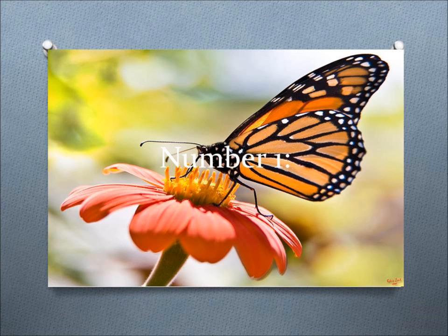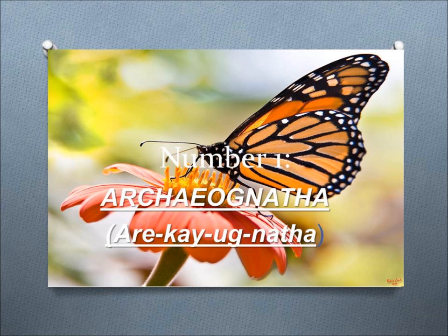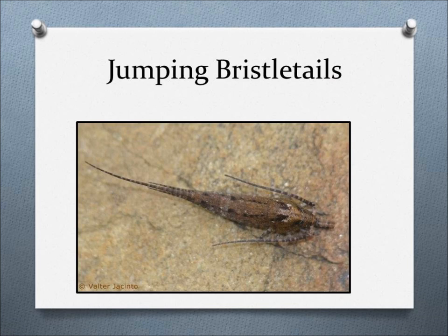Number 1, Archeognatha. This order includes jumping bristletails, which are insects without wings that will hide under bark, hide in litter, and hide in rock crevices.